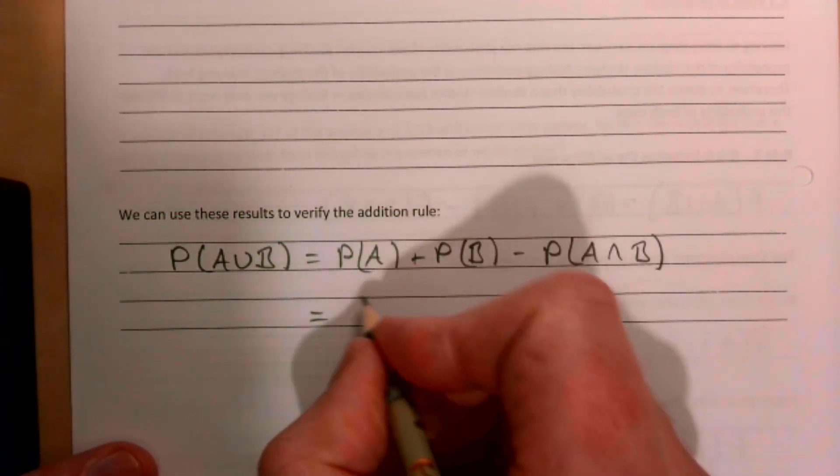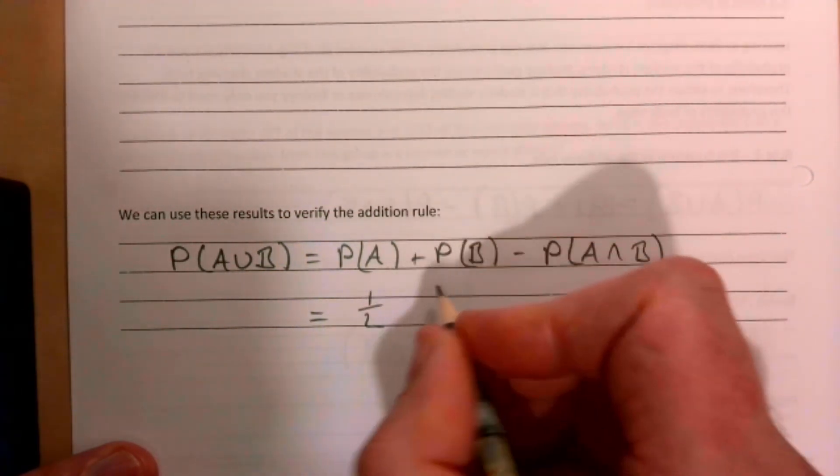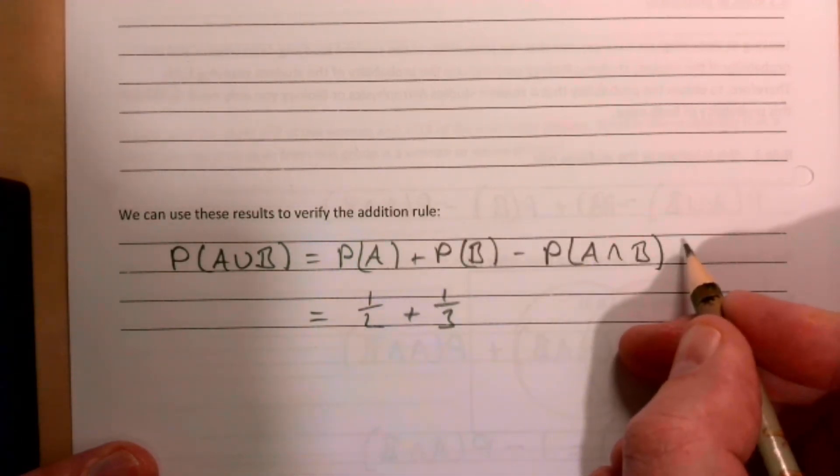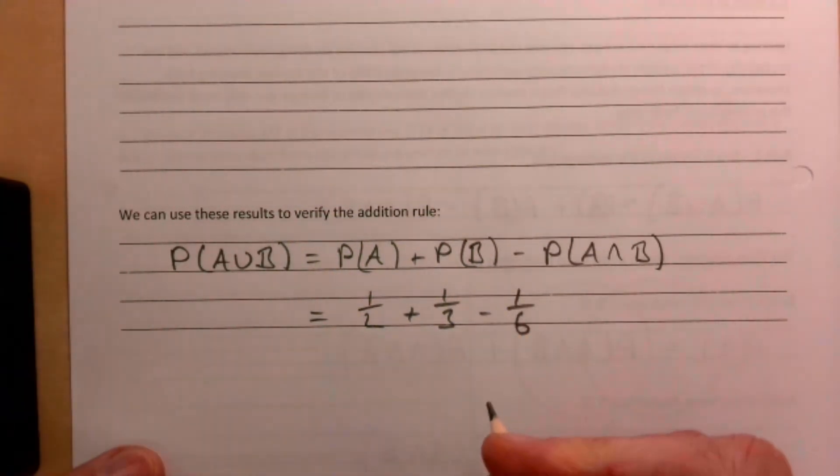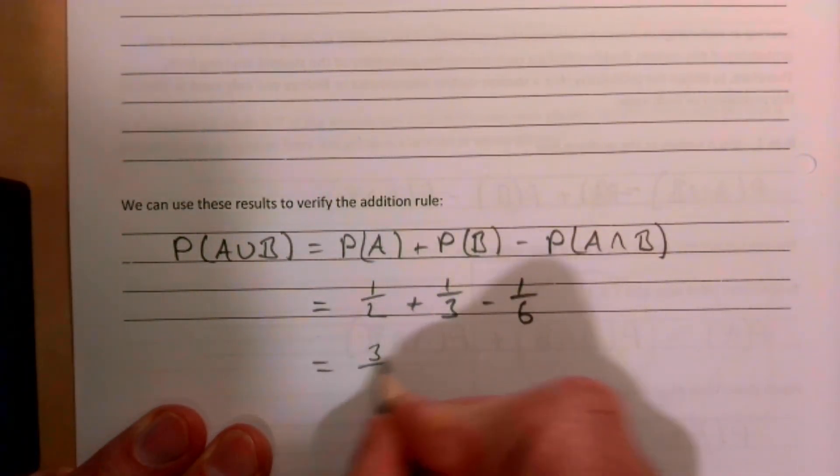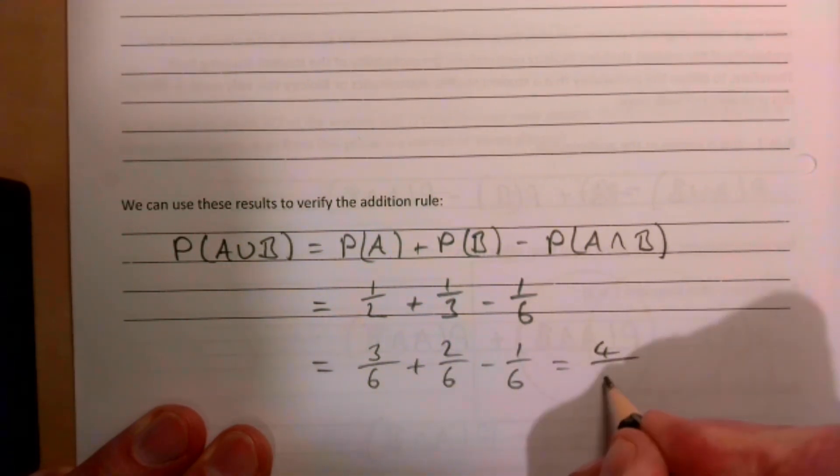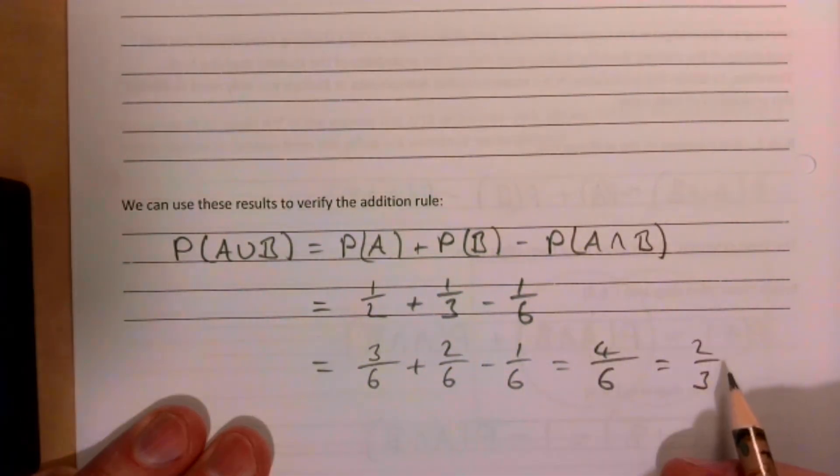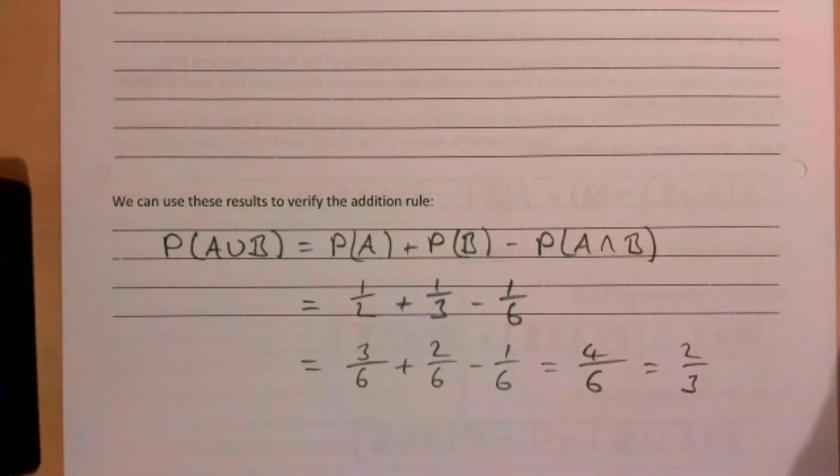So our probability of A, we had up there, it was going to be a half. The probability of B, again looking above, is a third. And the probability of A and B, that's in part four, let's take away 1/6. If you want we can do our sums—change everything to sixths: 3/6 plus 2/6 take away 1/6 is 4/6, which is two thirds. And sure enough, two thirds is our probability of A or B, so it shows that our addition rule works.